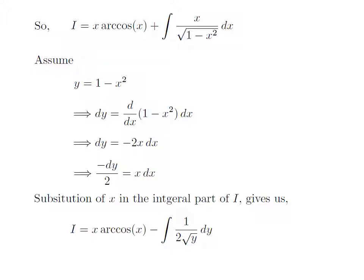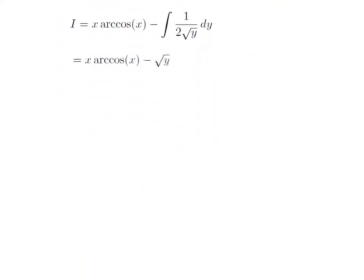We got I is equal to x times arccos(x) minus the integration of 1 divided by 2 into square root of y, with respect to y. This is a simple integration. The integration of 1 over 2 times square root of y with respect to y is equal to square root of y. So I is equal to x times arccos(x) minus square root of y.